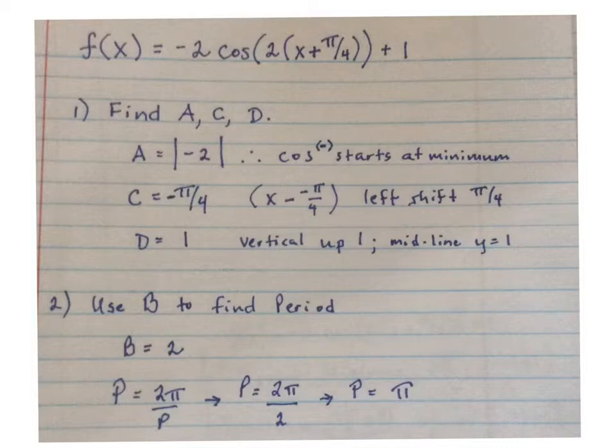We're going to use the value of b to find the period. Because b is equal to 2, our period would be equal to π.